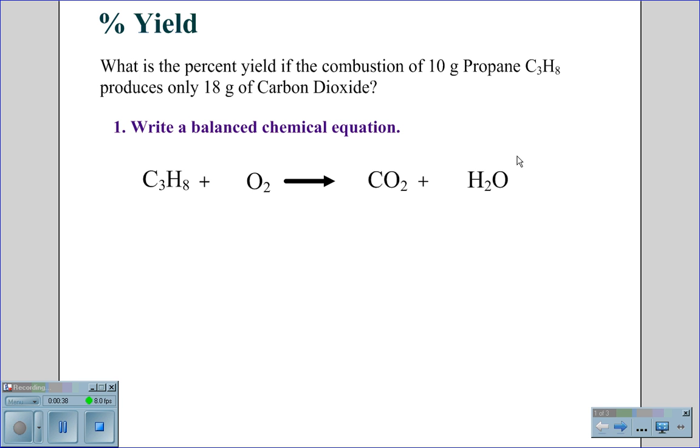We need to now balance the chemical equation. I'm going to begin by balancing the carbons by adding three in front of the CO2 so that we have equal amounts of carbon on both sides, three in the reactants on the left, three in the products on the right.